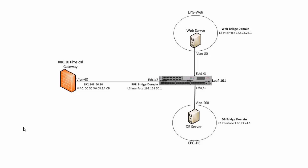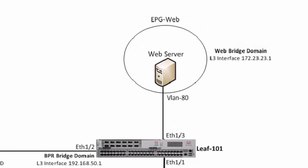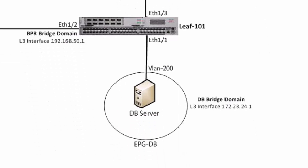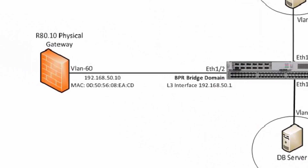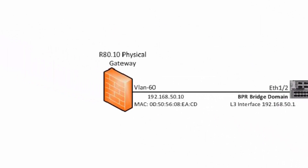Hi everyone. In this section I am going to configure the Fabric Policy in order to support two types of topologies. The first topology consists of a Web EPG connected to LIF-101 on port 1.3 on VLAN-80. The DB EPG is going to be connected to LIF-101 on port 1.1 on VLAN-200. The R-80 gateway is going to be connected to LIF-101 on port 1.2 on VLAN-60.